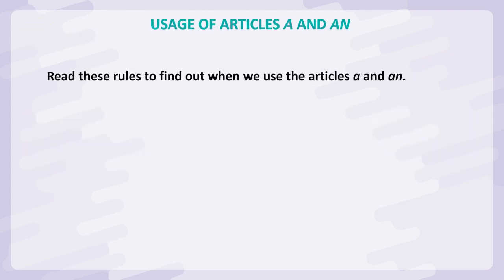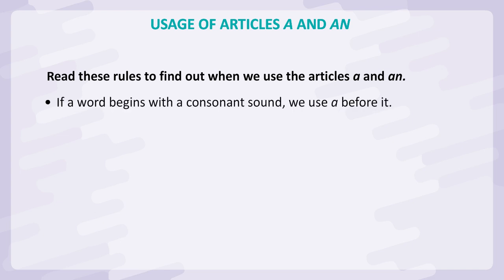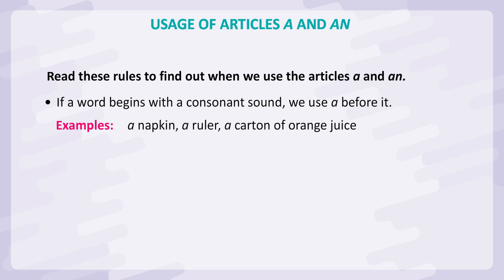Usage of articles a and an. Read these rules to find out when we use the articles a and an. If a word begins with a consonant sound, we use a before it. Examples: a napkin, a ruler, a carton of orange juice.